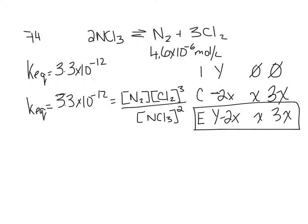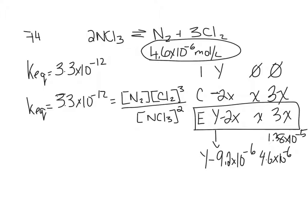We already know what our value of X is. This is N2, and N2 is equal to that. So we know what our value for X is. So Y minus 2 times 4.6 times 10 to the negative 6, 9.2 times 10 to the negative 6. And then we've got 4.6 times 10 to the negative 6 and 3 times X, 1.3 times 10 to the negative 5. All right, so now you're going to plug those in and solve for Y.